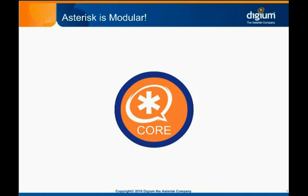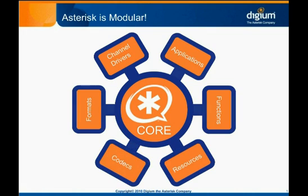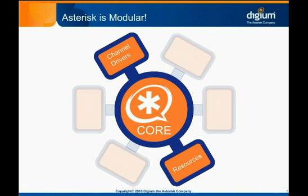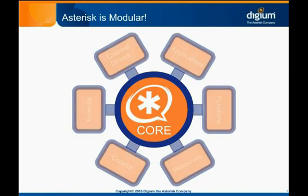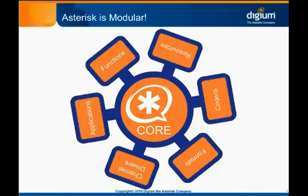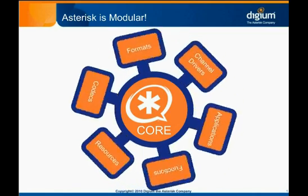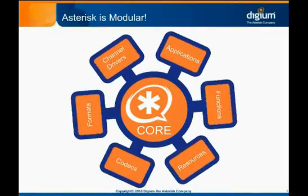To make Asterisk as flexible and extendable as possible, it was developed in a modular fashion. A relatively small and simple core manages loading and unloading dynamic modules that provide most of Asterisk's functionality. This approach gives the user fine-grained control over what a given Asterisk system can and cannot do. However, Asterisk in its purest form is not completely modular. Some modules are required to be loaded for Asterisk to run at all. When we refer to the core of Asterisk, we generally mean the basic modules required to make Asterisk run, and not the dynamic modules that provide typical call services.